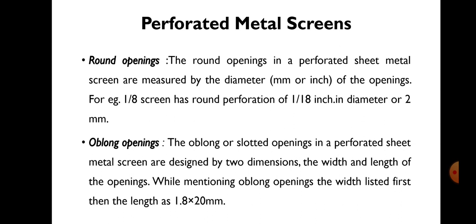The second opening is the oblong openings. The oblong or slotted openings in perforated sheet metal screens are designated by two dimensions: the first is the width and the second one is the length of the openings. While mentioning oblong openings, the width is listed first, then the length. For example, 1.8 by 20 mm — in this, 1.8 mm is the width of the opening and 20 mm is the length of the opening.